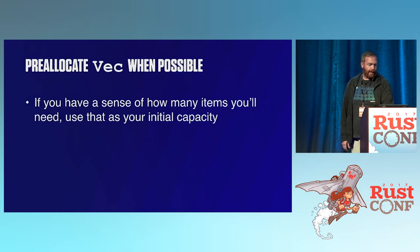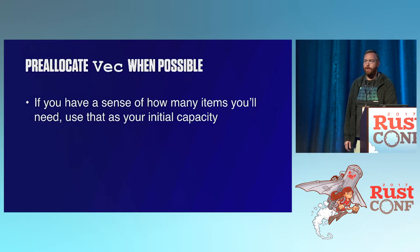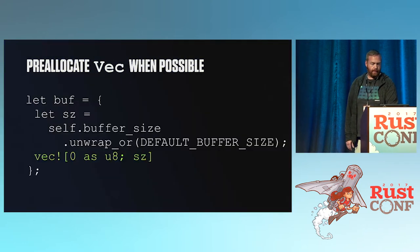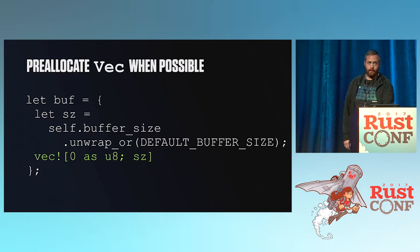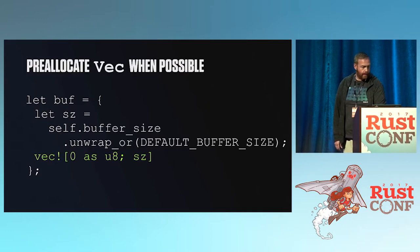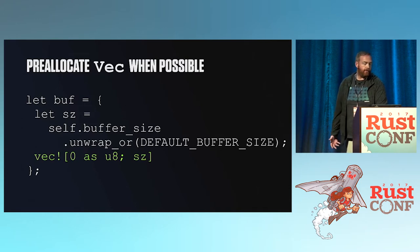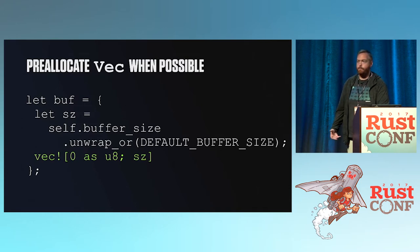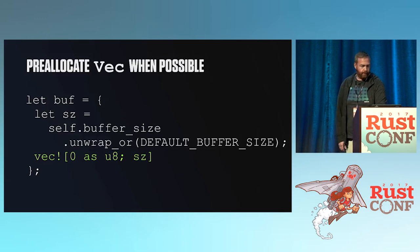Last, I want to talk about pre-allocating Vecs. When you look at experienced Rust programs, you see that they pre-allocate Vecs everywhere — they hardly ever allocate dynamically. Here's an example from Linkerd where we have a struct with a buffer size and a default size, and we make the buffer used to shuttle data around from inbound to outbound.